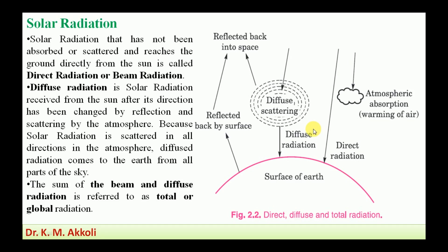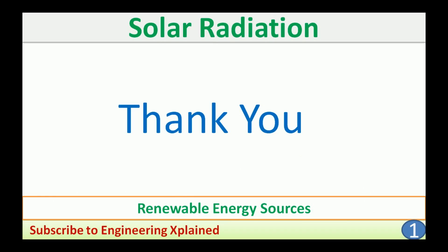In the next session, I will discuss the measurement of solar radiation — that is, direct radiation measurement, diffuse radiation measurement, and sunshine recorders. After that, I will discuss the conversion methods for converting solar energy into useful forms of energy. Solar radiation is a renewable energy source that can be used for different applications, either by converting it into electricity or by using the heat available in that radiation. Thanks for watching — if you like, subscribe, share, and comment.